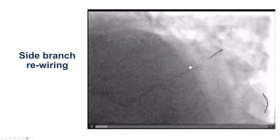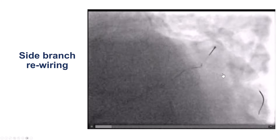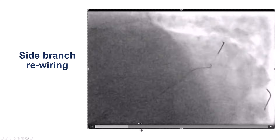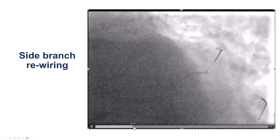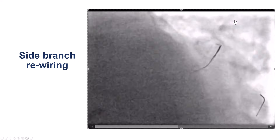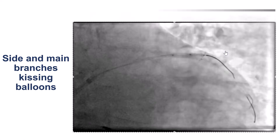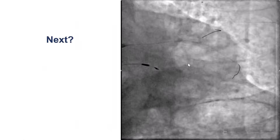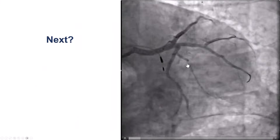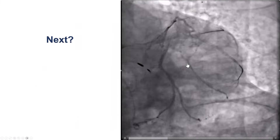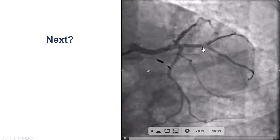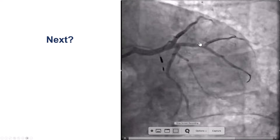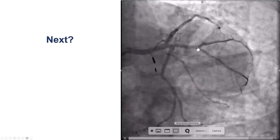We decided to do some ballooning. We rewired the side branch, using the jailed guide wire as a marker for when to go. This can be a little tricky, but we were able to achieve it with a workhorse guide wire. We then did kissing balloon inflation.